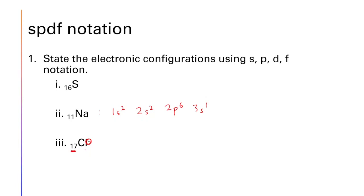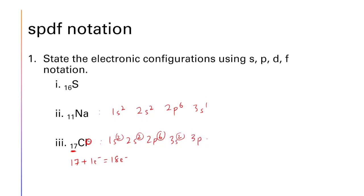For Cl⁻ (chlorine with a negative charge), the atom has one extra electron. Chlorine has atomic number 17, so Cl⁻ has 18 electrons total. The spdf notation is: 1s² 2s² 2p⁶ 3s² 3p⁶. Verify: 2+2+6+2+6 = 18 electrons.